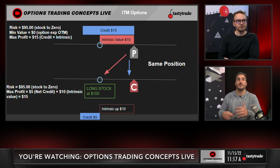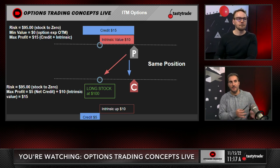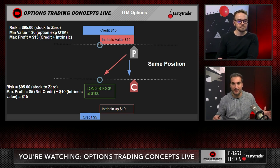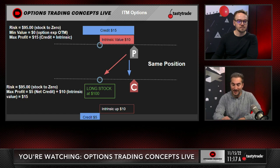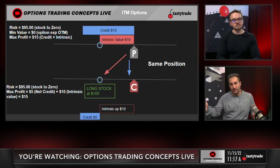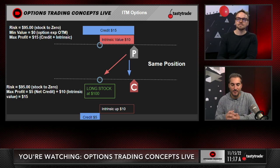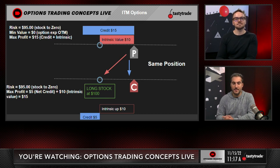When you look at your in-the-money positions this way, it makes more sense why we roll down call spreads or roll up put spreads and manage strangle positions. Out-of-the-money options are all extrinsic value, but once an option gets in the money you've got a stock component to your position — you're synthetically long stock via that intrinsic value. So rolling down a call makes sense because your position is effectively long 100 shares of stock through that in-the-money put.